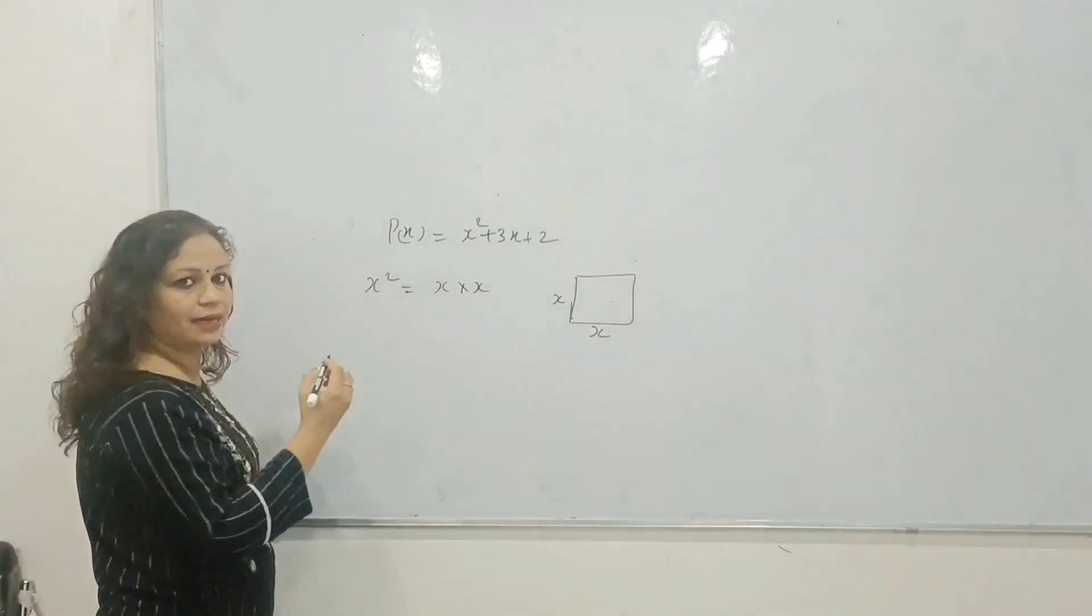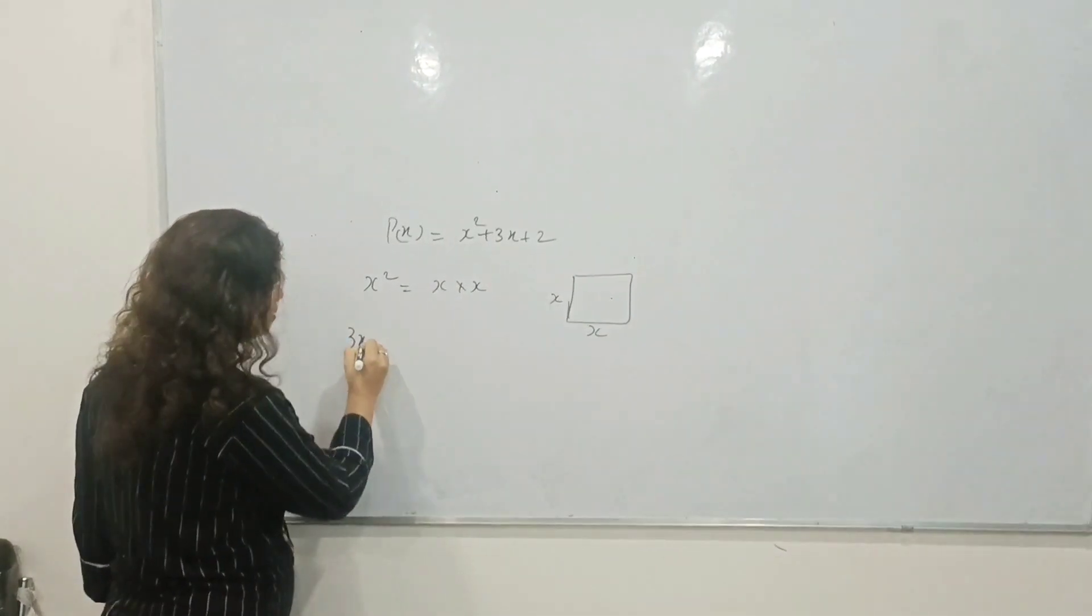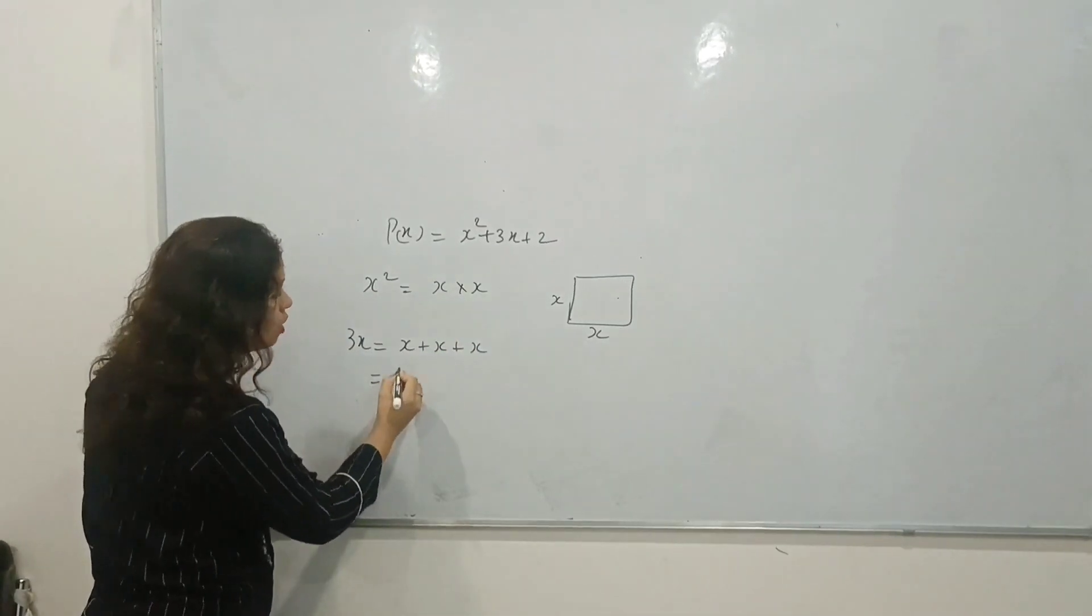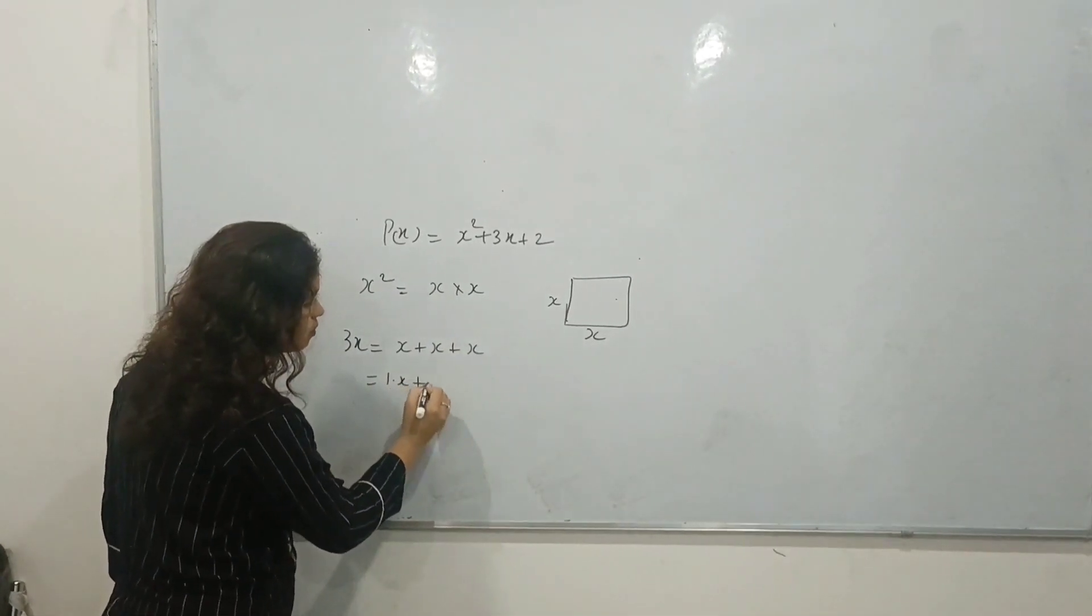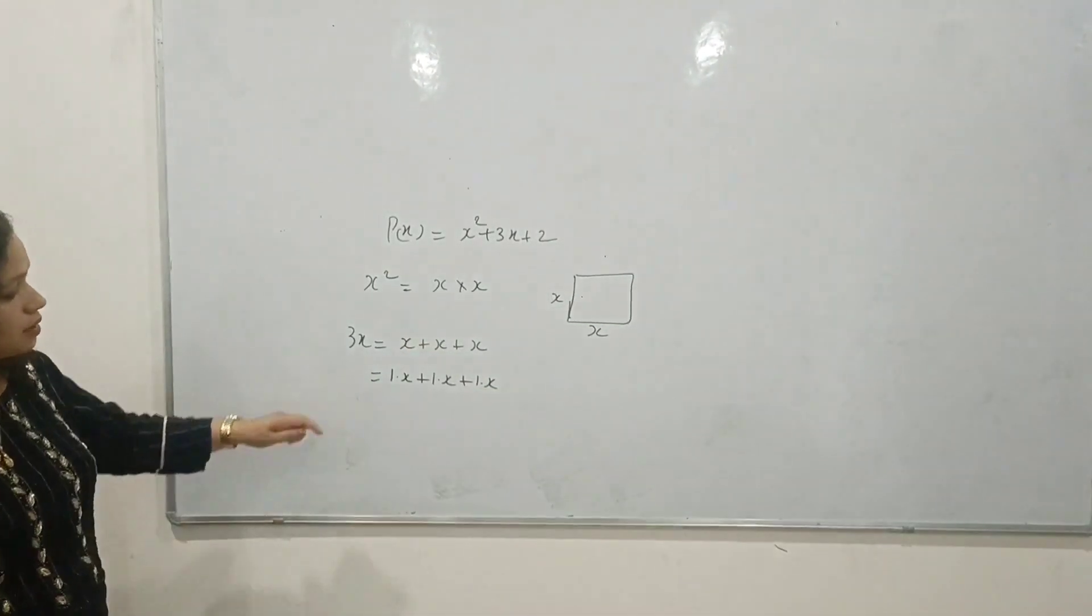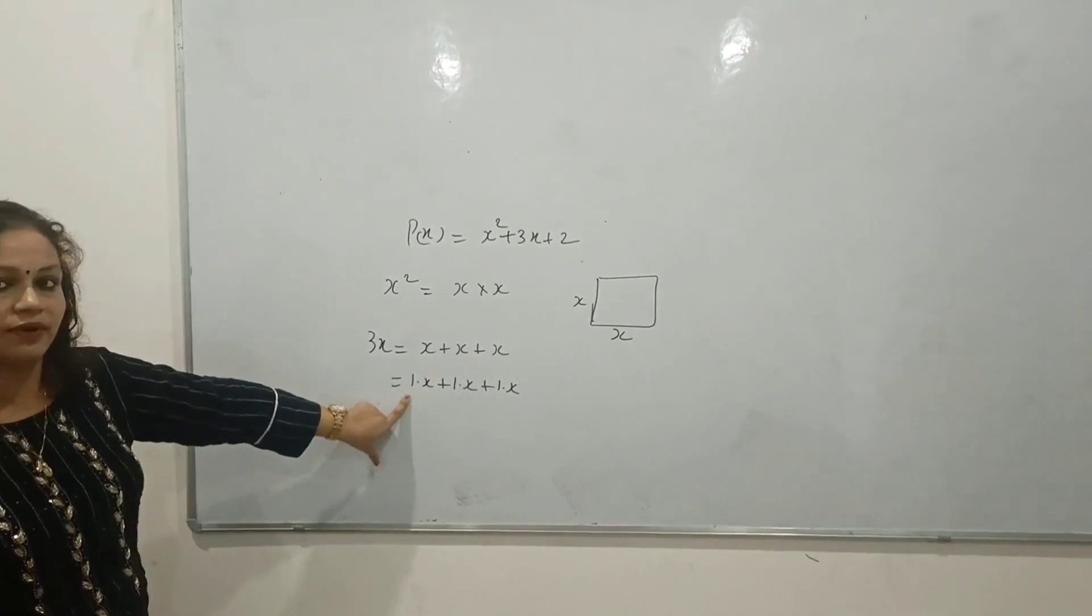Now come to the second part and let's draw the second part: 3x. 3x means x plus x plus x. We can also see x equals 1 times x plus 1 times x plus 1 times x plus 1 times x.